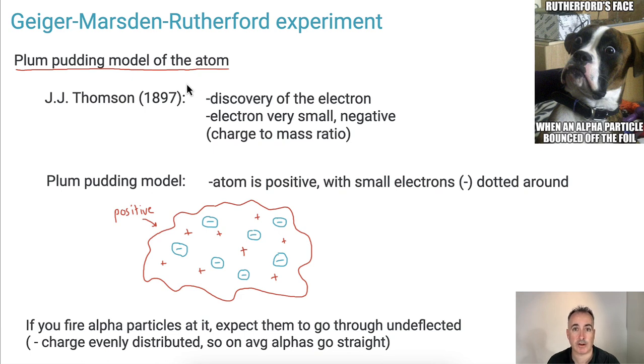For example, they knew that the atom had to be overall positive. So that's why I've drawn this sort of pudding here, and then it has these small little electrons dotted around it. That's how they thought it might be explained. So plum pudding model means the entire atom is like a blob of positive with little dots of negative dotted around and equally dispersed.